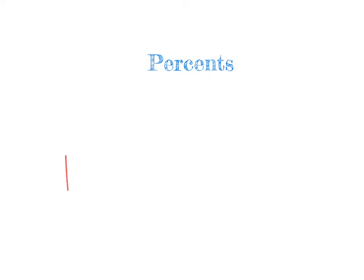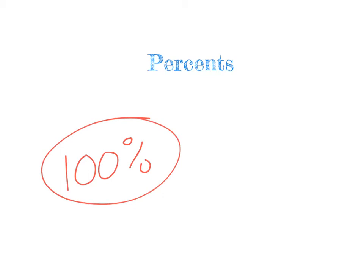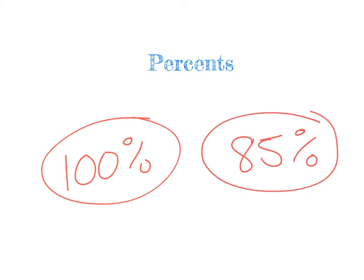In this video I want to talk about percents. We've all probably been exposed to percents before — we hopefully get 100% on all of our quizzes. We see percents when we get graded on things, and if we get a lesser percent on a quiz, that means what we got out of 100. Remember that 100 number — that's what percent means. If we break down the word 'percent,' it really means per 100.